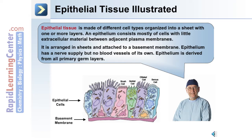This can be seen in the image on the slide. There is very little extracellular space between each epithelial cell. Epithelium has a nerve supply but no blood vessels of its own, and it is derived from all three primary germ cell layers.